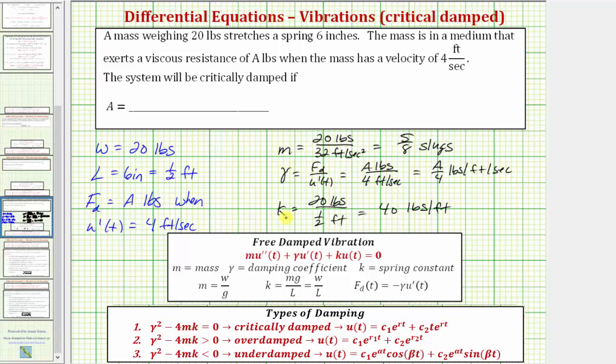Now that we have m, gamma, and k, we can set up the equation, gamma squared minus 4mk equals zero, and then solve for a to determine what a must be so the system is critically damped. Let's do this on the next slide.